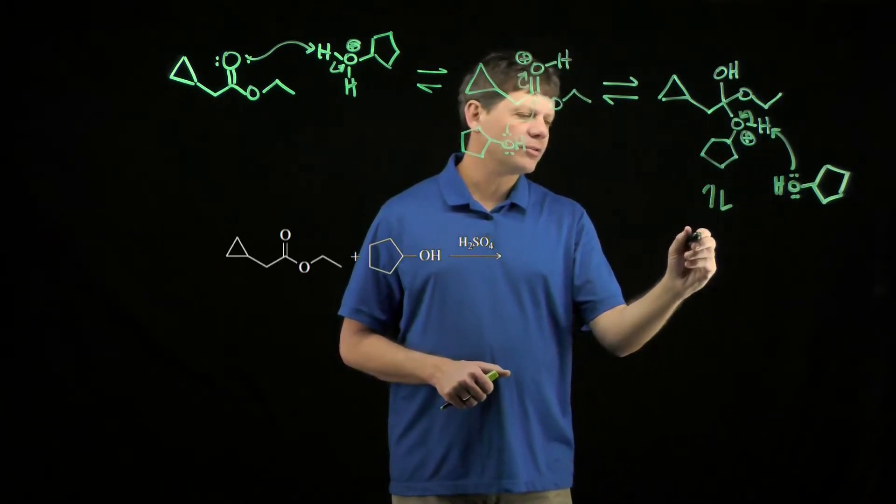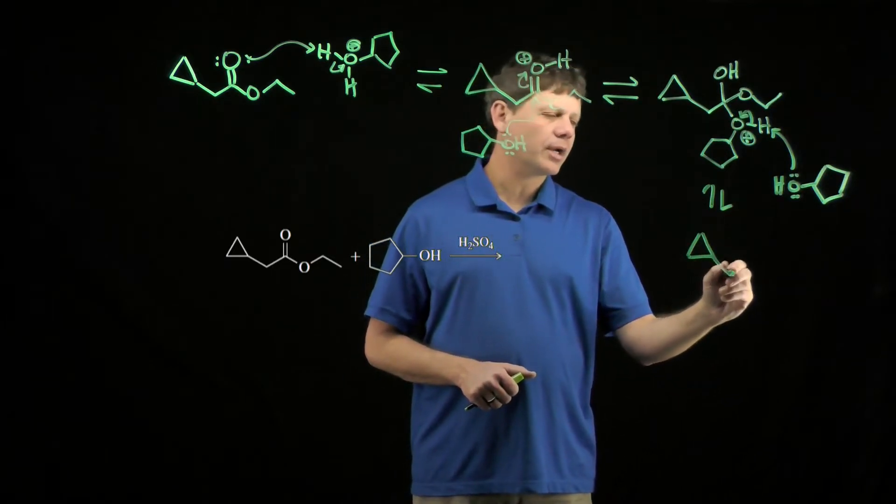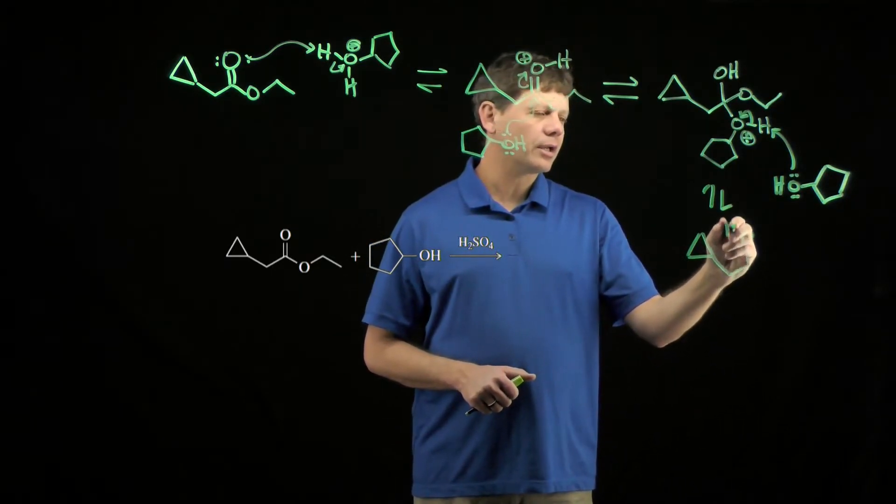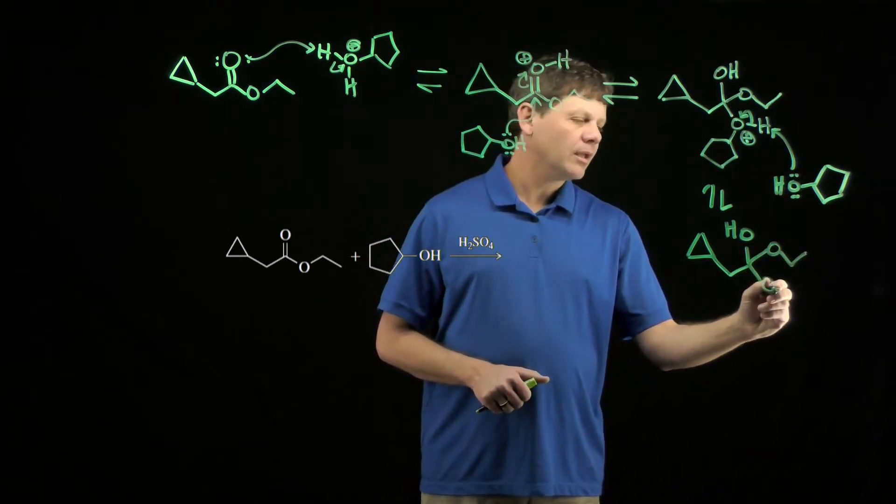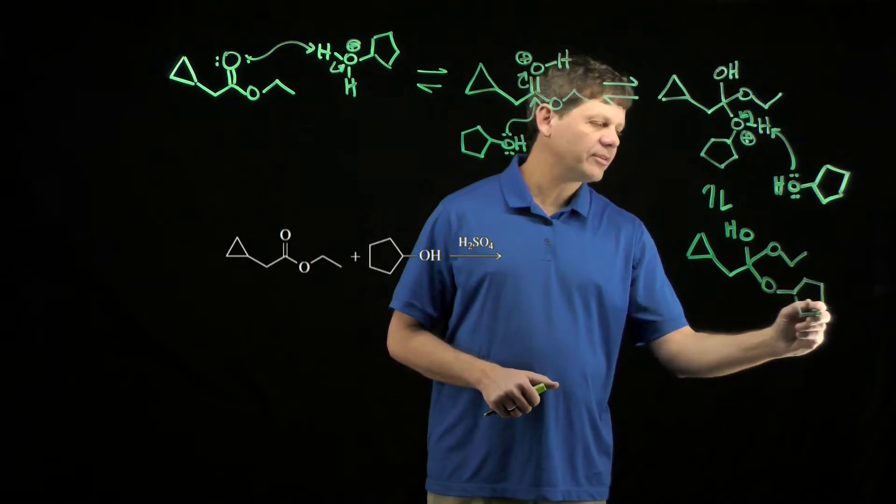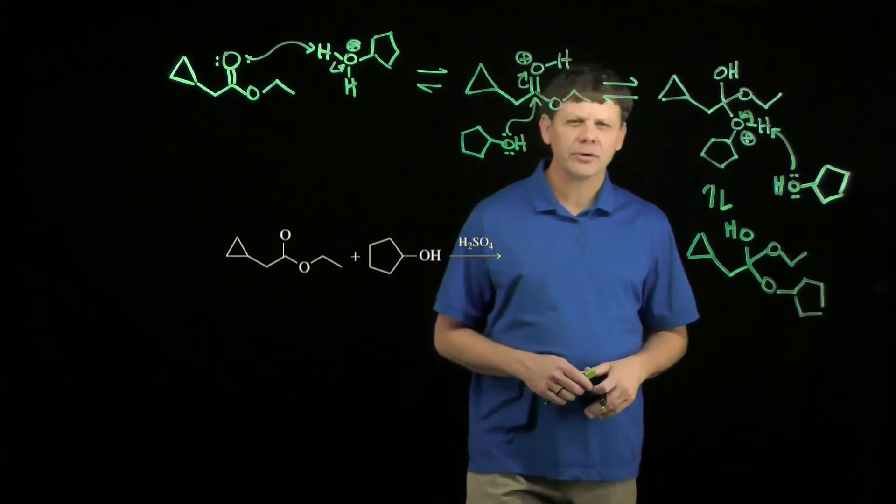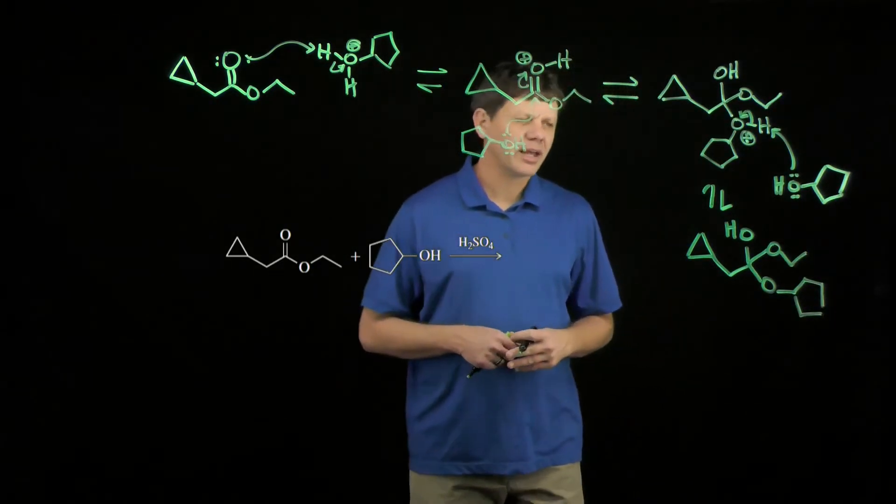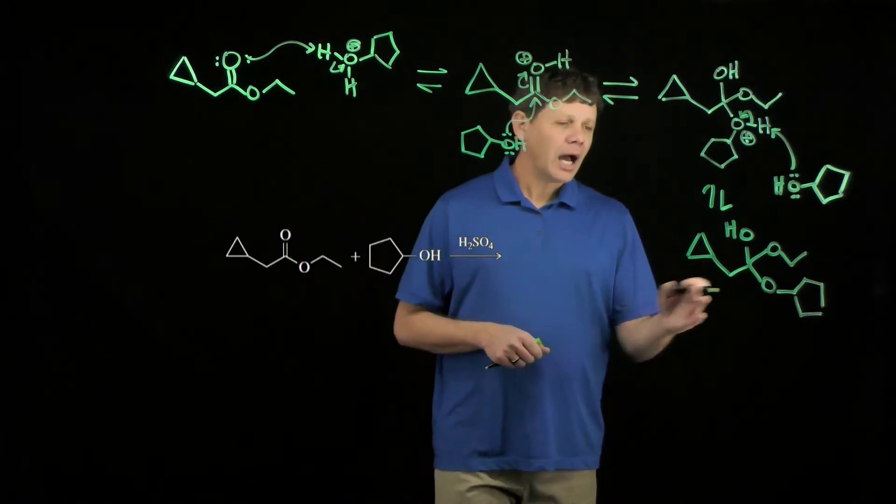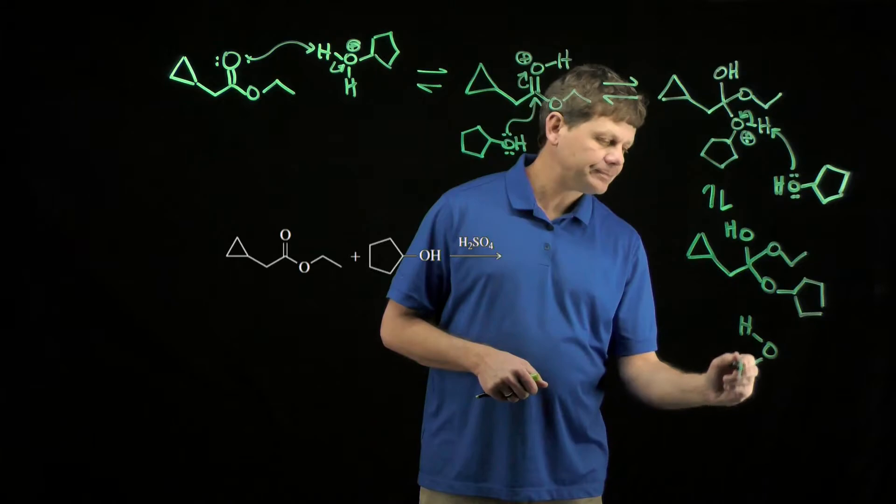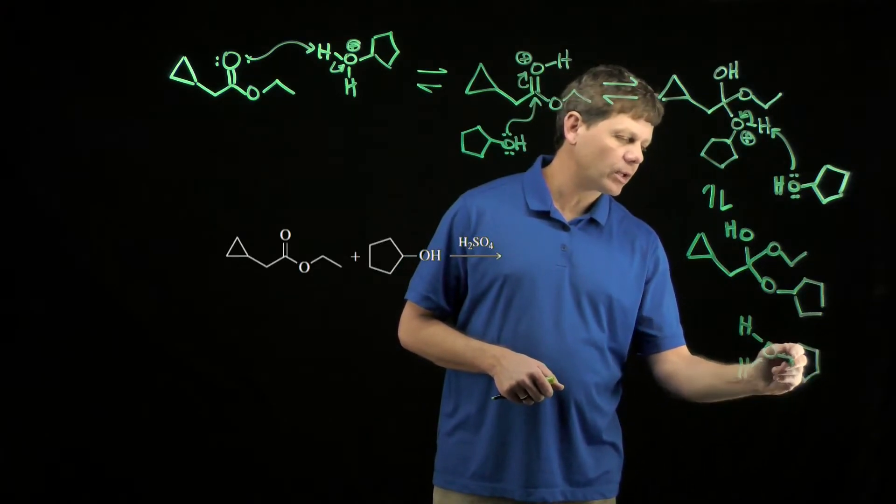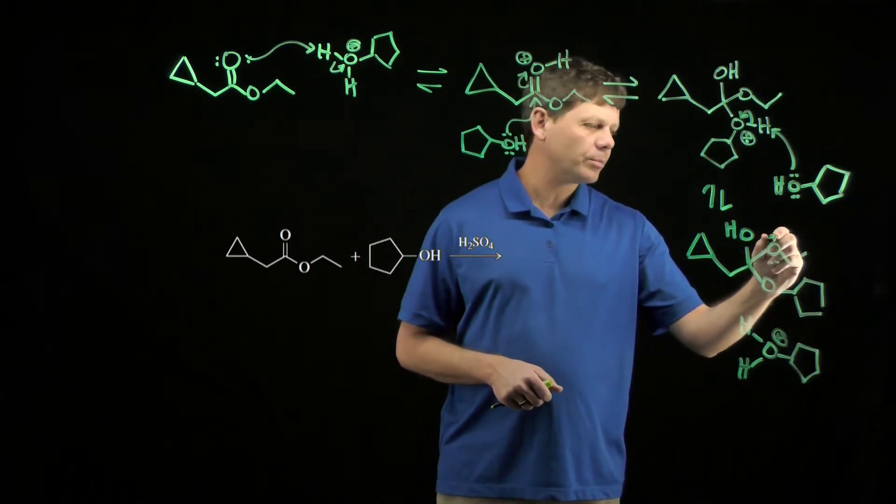Note that all of these reactions we've drawn with reversible arrows because we're under conditions where equilibration can happen. This molecule here, this intermediate would be considered the real neutral tetrahedral intermediate. We also generated an acid in the previous step. And so now we're able to protonate this ethoxy group.